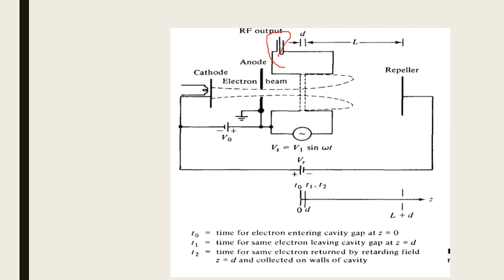The speciality of the reflex klystron is that it is a single cavity. Here again, you have the cathode from which the electrons will be emitted out. We will be having interaction and velocity modulation. All the derivations will not be shown again because they are exactly the same as two-cavity klystron. If in papers, two-cavity klystron or reflex klystron velocity modulation is asked, you can write the same thing. Maybe for reflex klystron, you can just change the phase — instead of plus, you can make it negative.